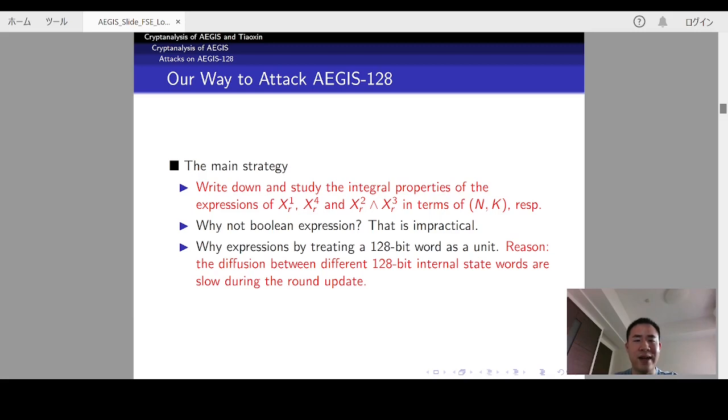The main strategy is to write down and study the integral properties of the expressions of XR1, XR3, and XR2 and XR3 in terms of the nonce N and the key K, respectively. So, what kind of expression should we study? The Boolean expression?